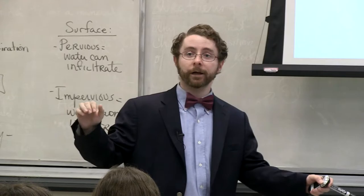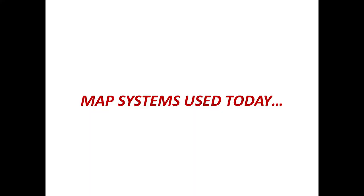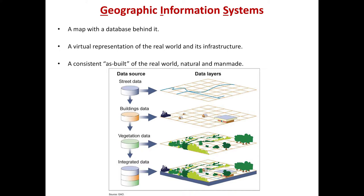There are certain map systems used today. One of them is GIS — Geographic Information Systems — which I mentioned earlier about placing layers of information onto a map. I have an example I'd like to do with you to show how GIS works.